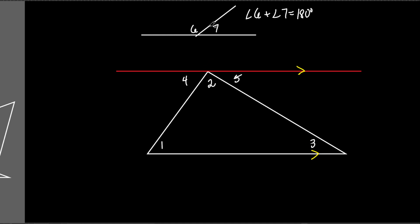Any angles that form a straight line add up to 180 — and it doesn't have to be just two angles. You could have more than two angles forming a straight line. As long as they make a straight line, all those angles add up to 180. Now, angles four, two, and five all form a straight line, so angle four plus angle two plus angle five equals 180.